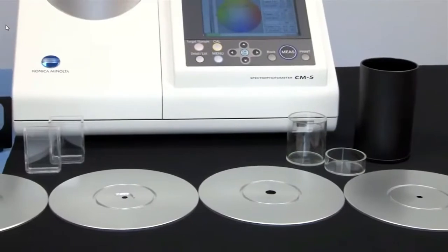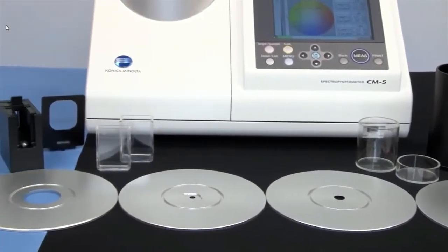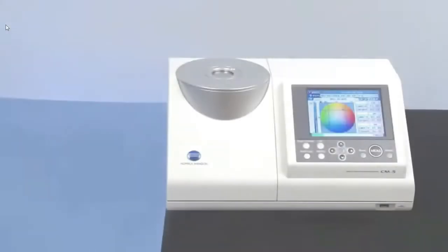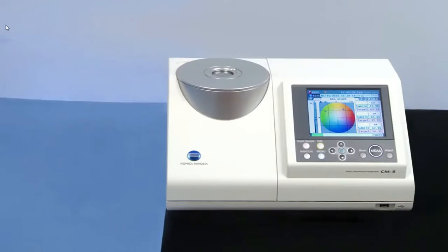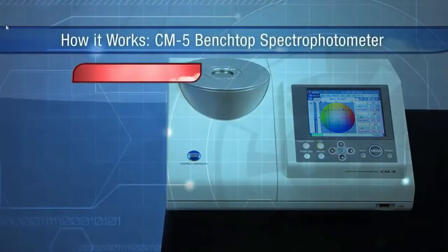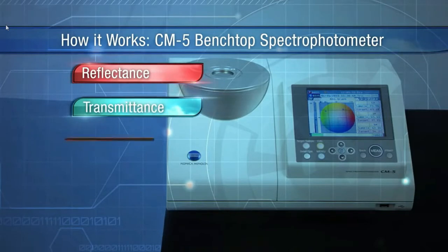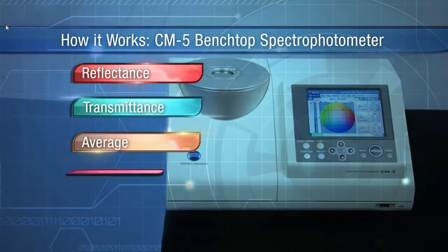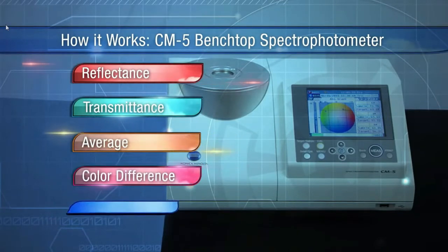A variety of functions and accessories set this innovative spectrophotometer apart. With the versatile CM5, you can measure in reflectance or transmittance, calculate average measurements for textured samples, create target values for color difference measurements, and calculate haze through powerful SpectraMagic NX software with an easy-to-use wizard mode.